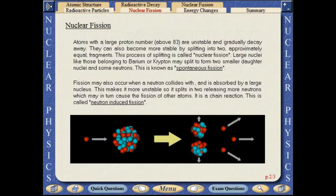Large nuclei, such as those belonging to barium or krypton, may split to form two smaller daughter nuclei and some neutrons. This is known as spontaneous fission.